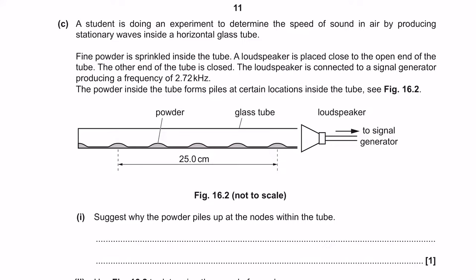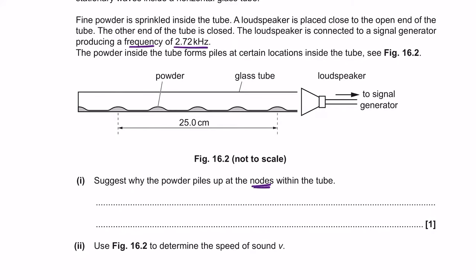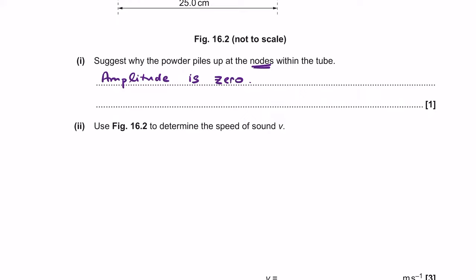For the next part, a student is determining the speed of sound in air by producing stationary waves inside a horizontal glass tube. Fine powder is sprinkled inside the tube, and a loudspeaker at the open end is connected to a signal generator producing 2.72 kHz. The powder forms piles at certain locations. Part I asks why the powder piles up at nodes: nodes have zero amplitude, so the displacement is zero and the powder doesn't move.